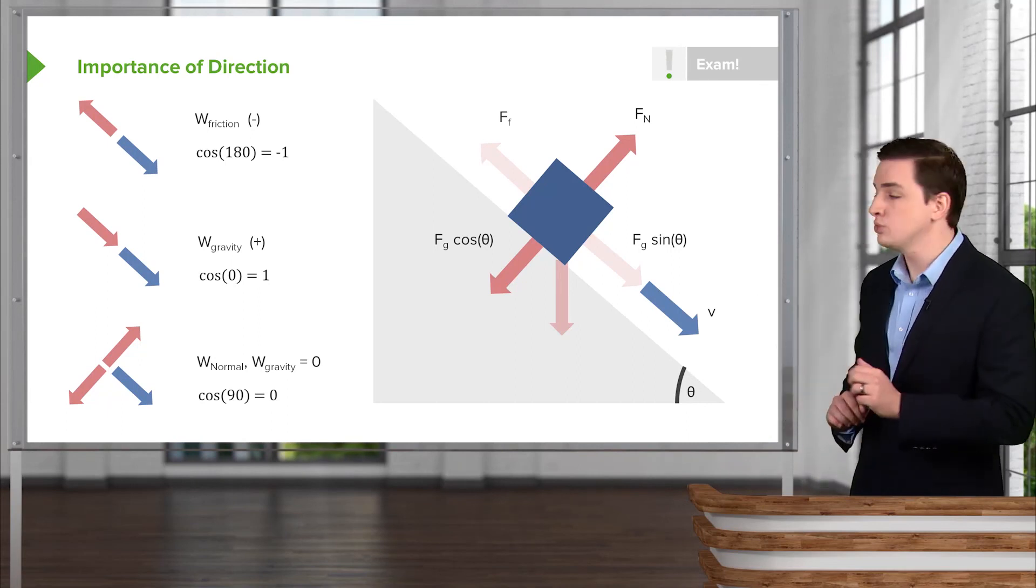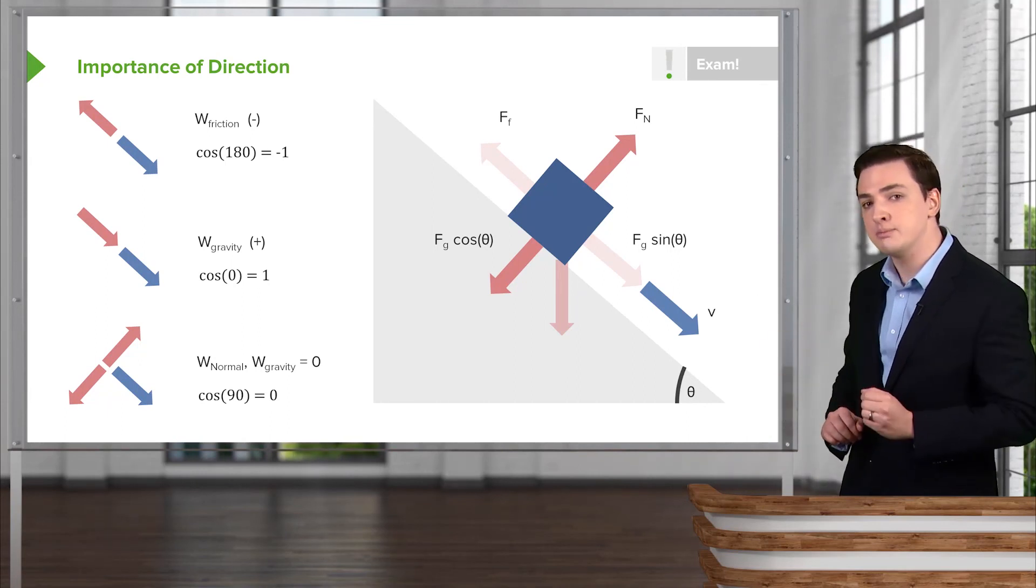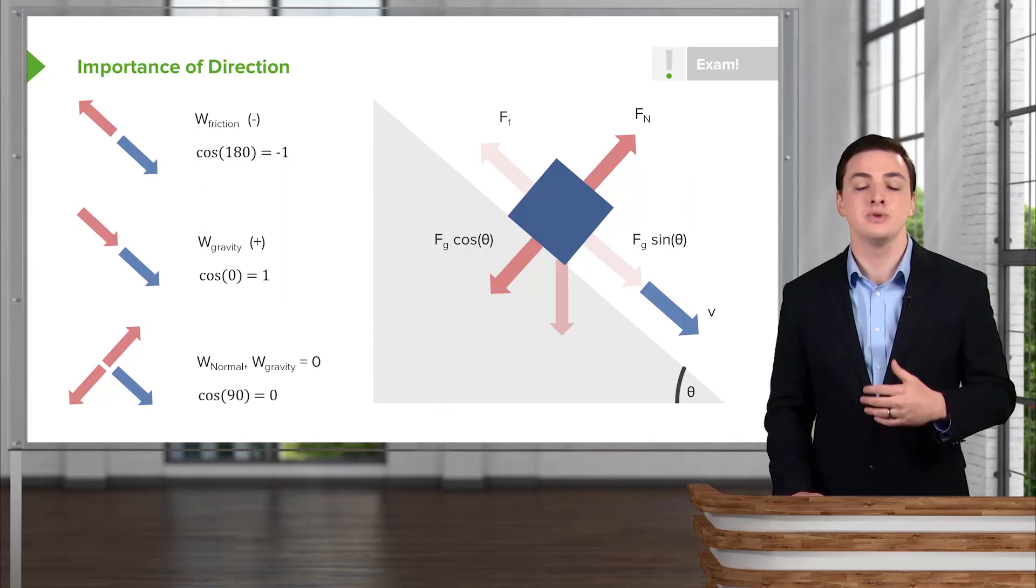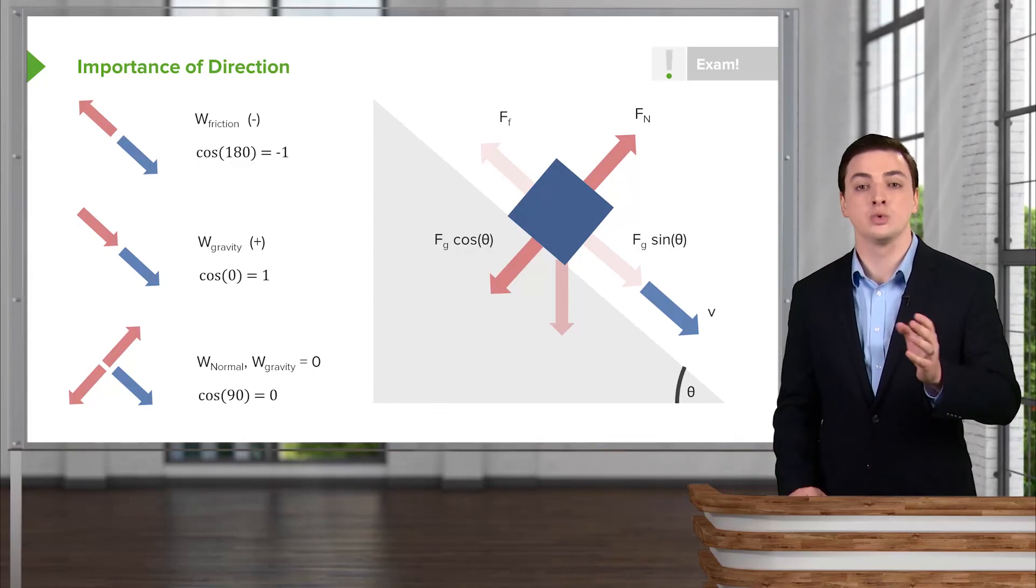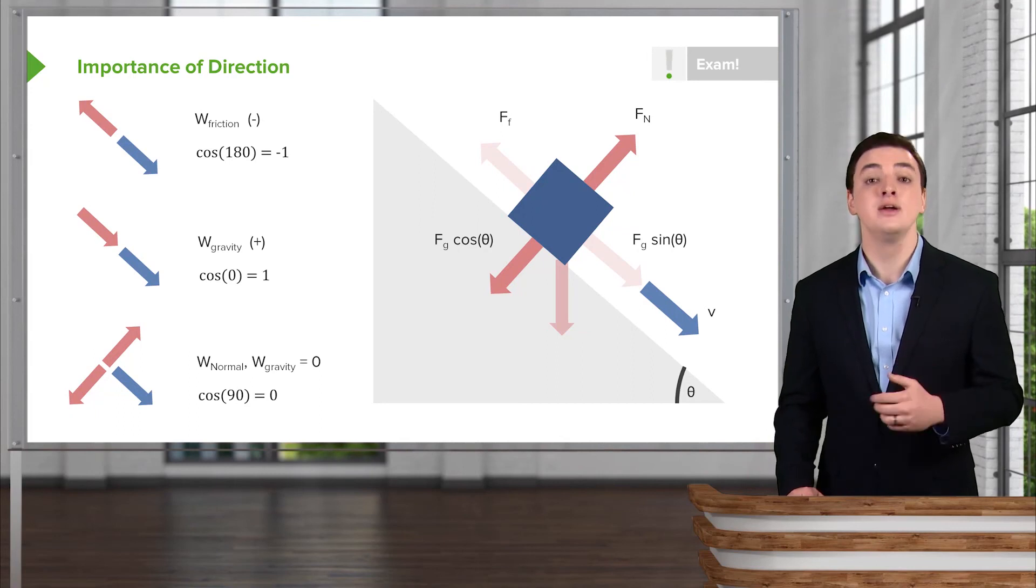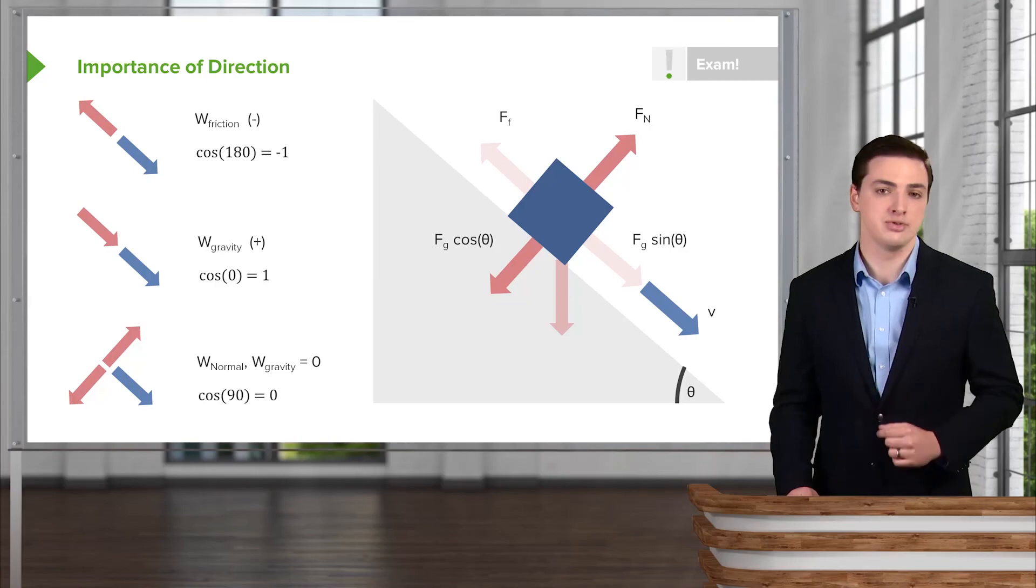So in an example like this one, if you were trying to find the total work done by all of these forces, you would want to add up the work done by friction and the work done by the component of gravity that's going down the slope, and then you could find the change in the kinetic energy of your object as it moves down the slope.